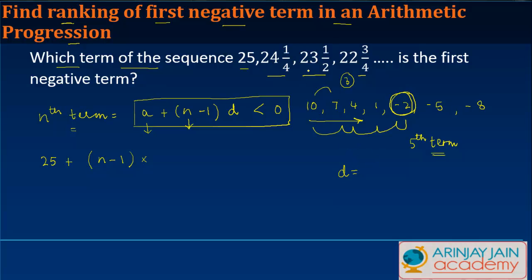minus 25. If we take 4 as the LCM, we get (97 - 100)/4 = -3/4. So the common difference